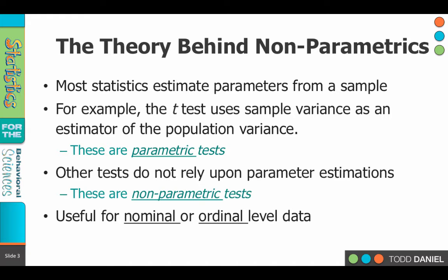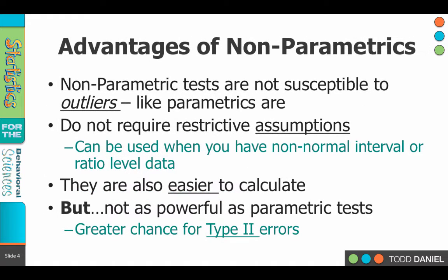Non-parametric tests are very useful when the data are at the nominal or the ordinal level. They also have the advantage that we can use them when our parametric tests break down or the assumptions of the test have been too badly violated to use parametric statistics. Non-parametric tests are not susceptible to outliers in the same way that parametric tests are, and if the assumptions have been violated, we can still use a non-parametric alternative.